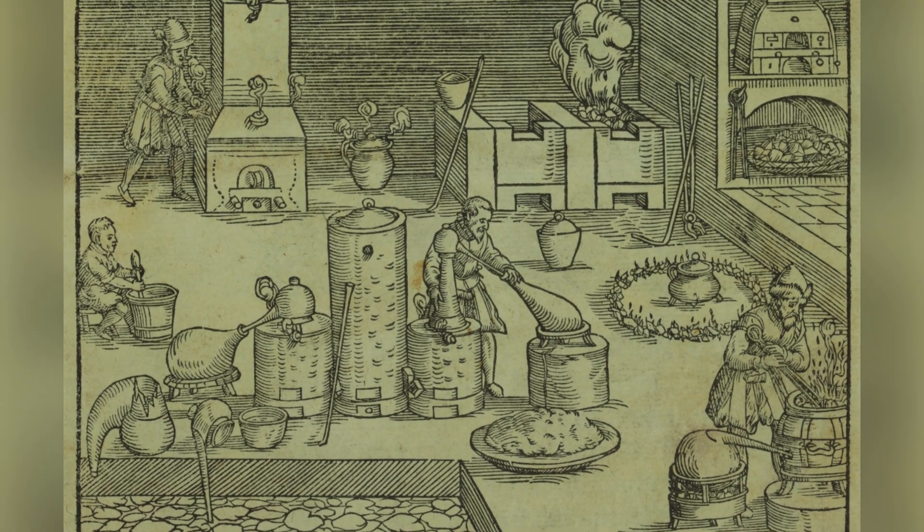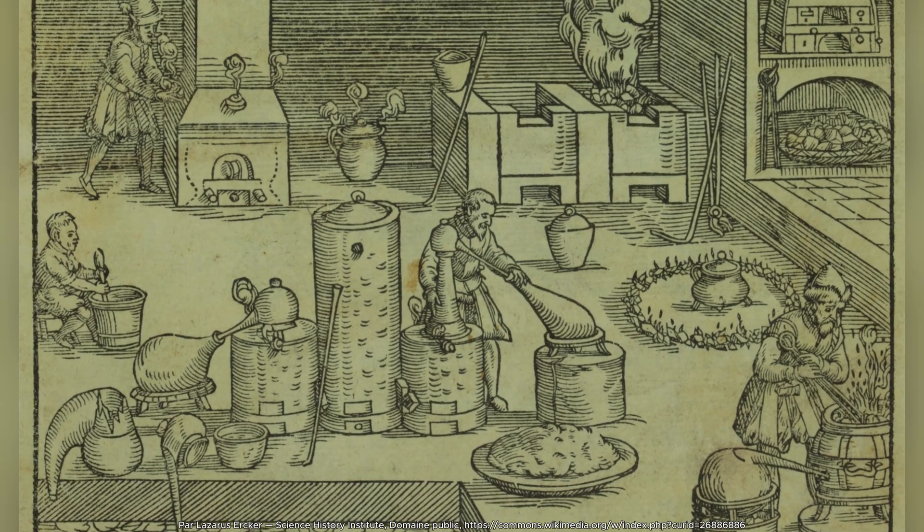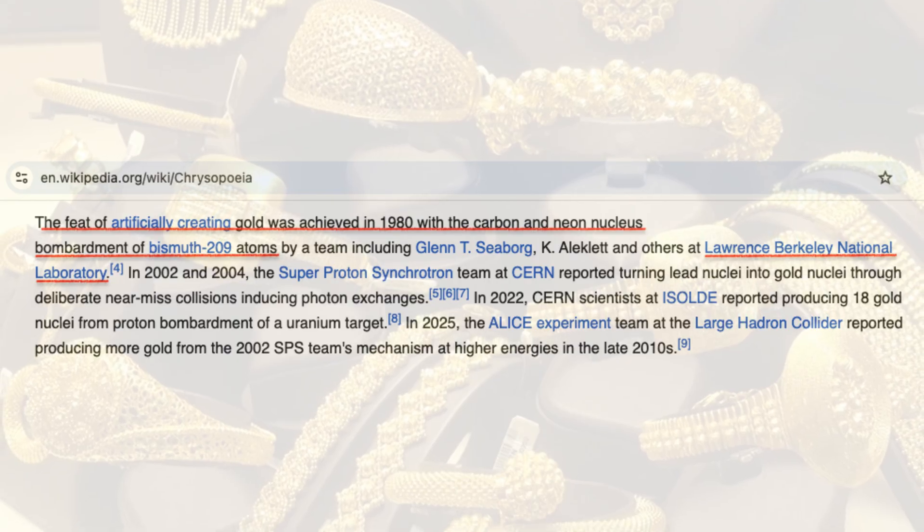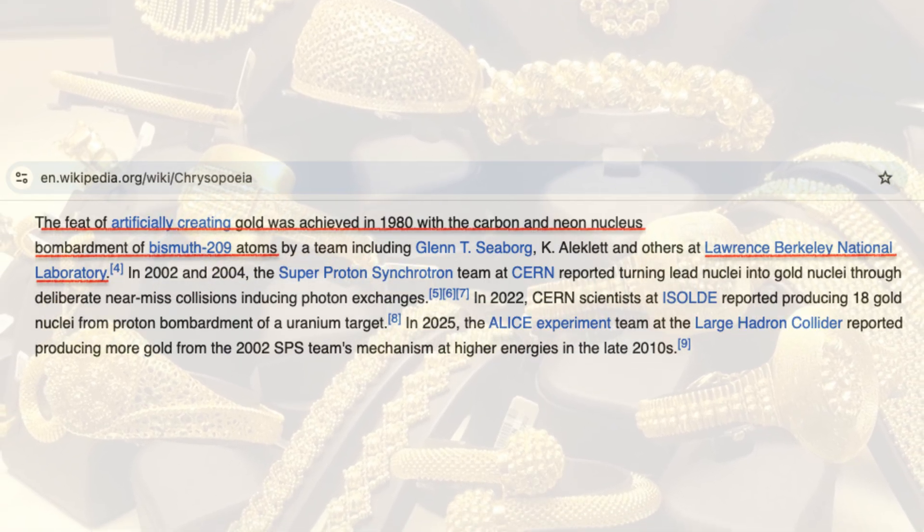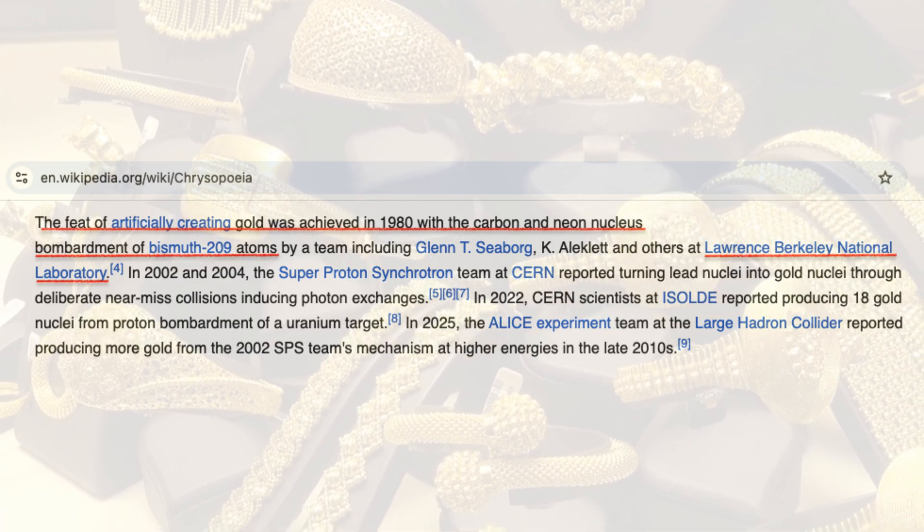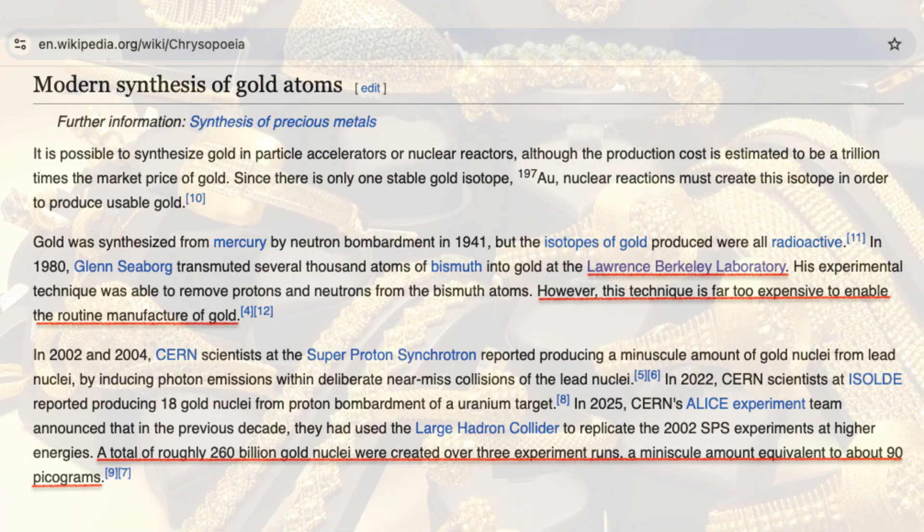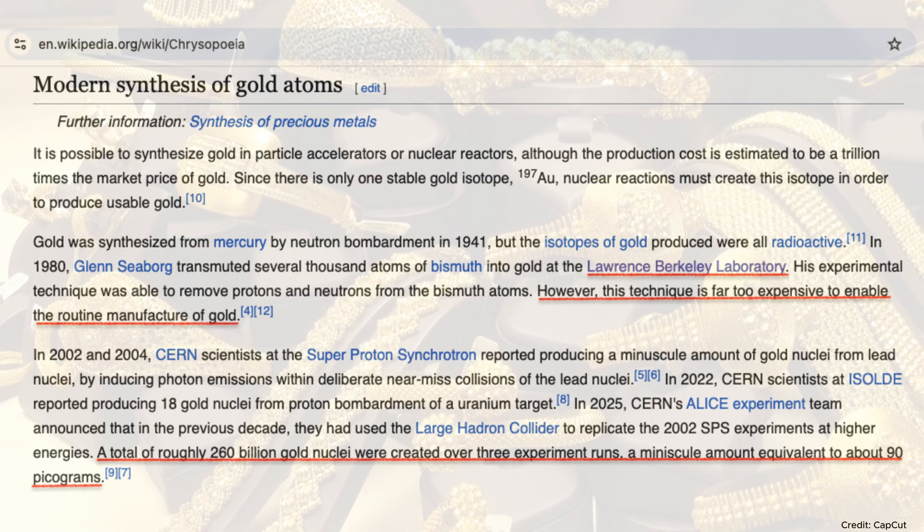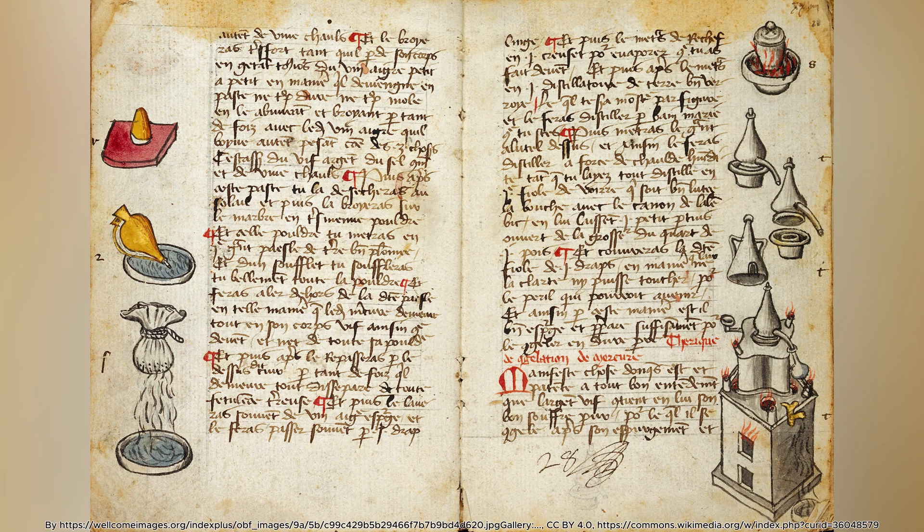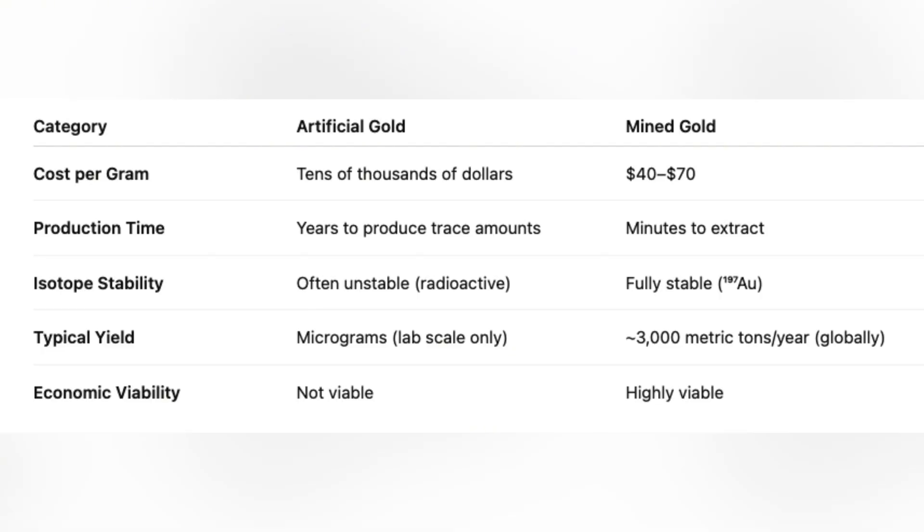Historically, alchemists lacked the tools to understand why their efforts failed. Turning lead into gold requires altering the number of protons in the nucleus, something only nuclear reactions can achieve. It wasn't until 1980 that researchers at Berkeley Laboratory successfully transmuted bismuth into gold. The scientific success was undeniable, but the financial cost, roughly one quadrillion dollars per ounce, was absurd. The dream of the alchemist had finally come true, but at a price that made it less valuable than a myth.